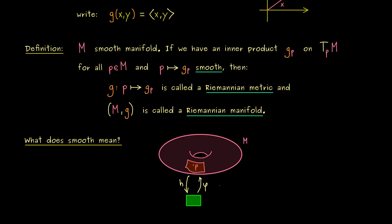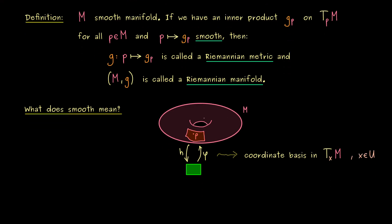If we have a chart or parameterization, this defines a coordinate basis in T_p M. However, since we can use the same chart h for points in the neighborhood of p, let's write T_x M. Hence x is just an element in U if we call this set here U. Ok, and there we have our coordinate basis as always denoted with this del symbol.